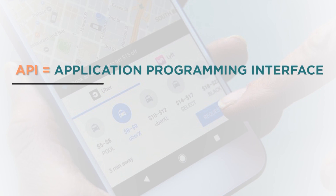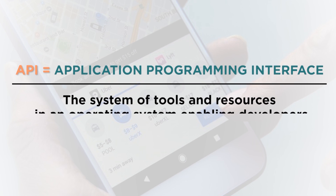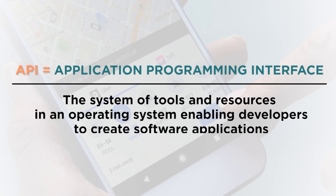API, or Application Programming Interface, is defined as a system of tools and resources in an operating system, enabling developers to create software applications.